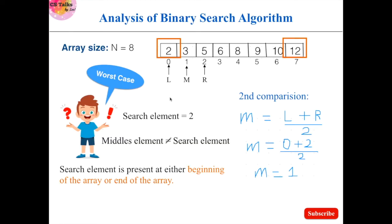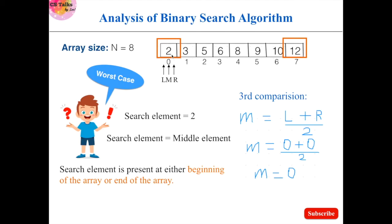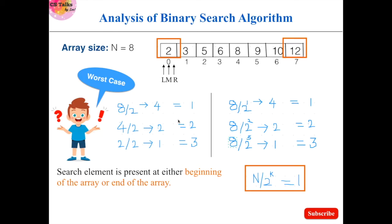Again we calculate a new midpoint: L is 0 and R is 0, so the midpoint is also 0. All three iterators point to the same location and the middle element is 2. This 2 is compared with the search element — both are equal, and the element is found at index 0. The pattern shows: in the first comparison the array of size 8 is divided into two halves (subarray size 4), in the second comparison into size 2, and in the third comparison into size 1.